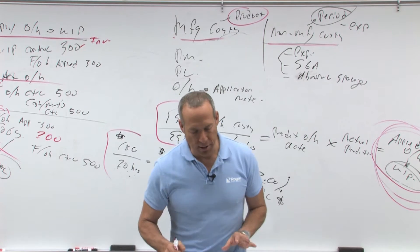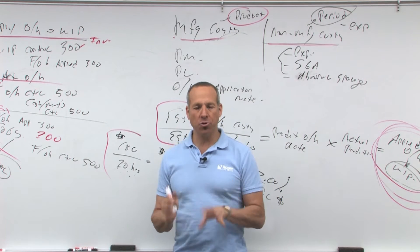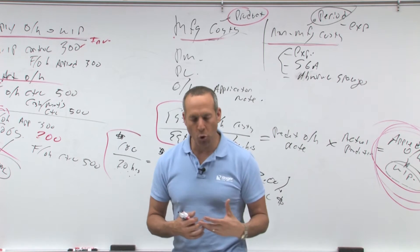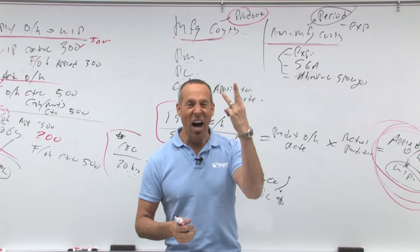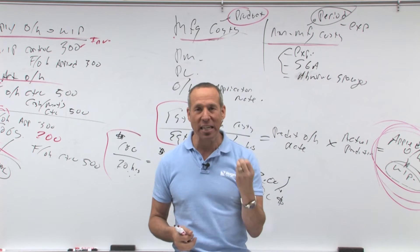All right, let's talk about the flow of a cost system. Now remember, in a non-manufacturing company, you've got one type of inventory, cost of goods purchased. In a manufacturing enterprise, we've got three different types of inventory.